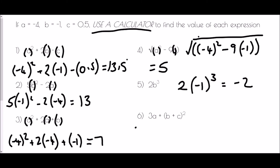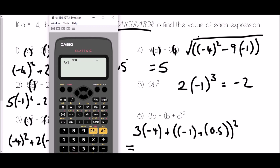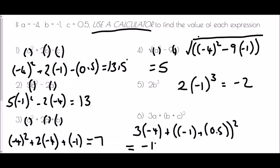Finally, question 6: 3 bracket a, which is negative 4, close bracket, plus bracket b, which is negative 1, close bracket, plus bracket c, which is 0.5, close bracket, all squared. Typing that in: 3 bracket negative 4 close bracket, plus bracket negative 1 close bracket, plus 0.5, close big bracket, squared. The answer comes out as negative 47 over 4, which is negative 11.75.